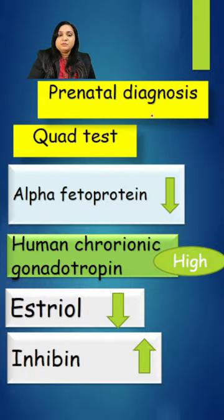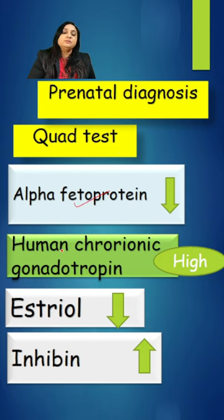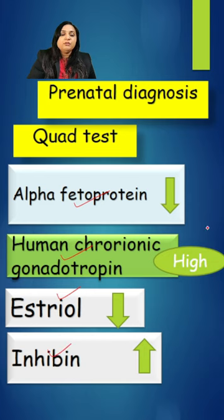Let's learn the Quad Test, which is done for the prenatal diagnosis of Down syndrome. The components of the Quad Test are: alpha-fetoprotein (AFP), human chorionic gonadotropin (hCG), estriol, and inhibin.